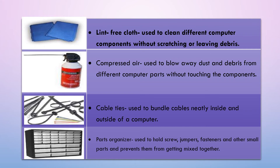Compressed air is used to blow away dust and debris from different computer parts without touching the components. With computers and electronics, compressed air is the preferred method for removing dust and dirt from sensitive electronic parts. Cable ties are used to bundle cables neatly inside and outside of a computer. Cable ties are fasteners that bundle your cables and wires together to keep them organized and prevent damage. They come in different sizes, lengths, materials, and even colors.